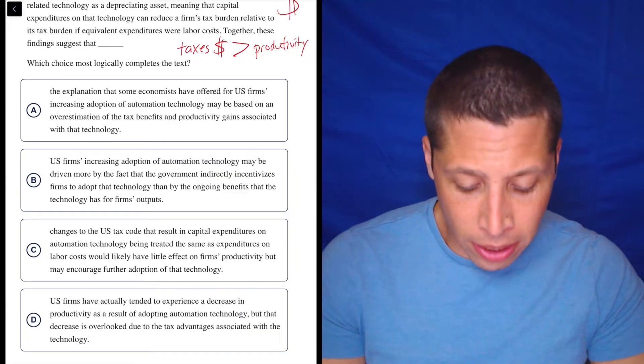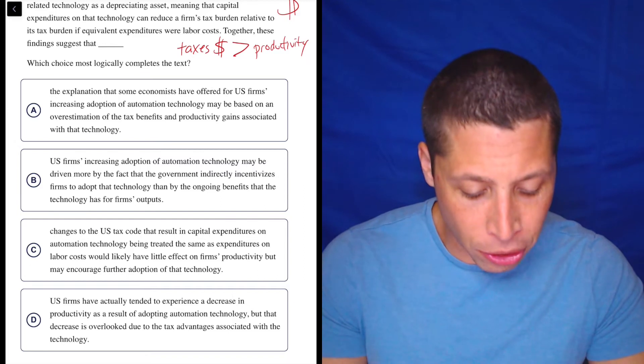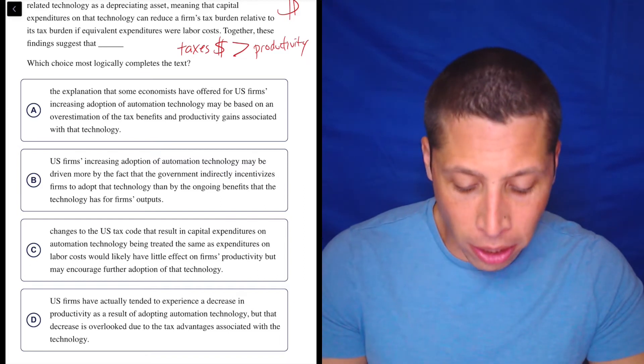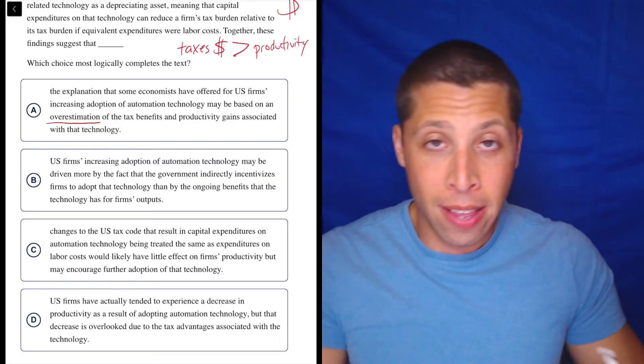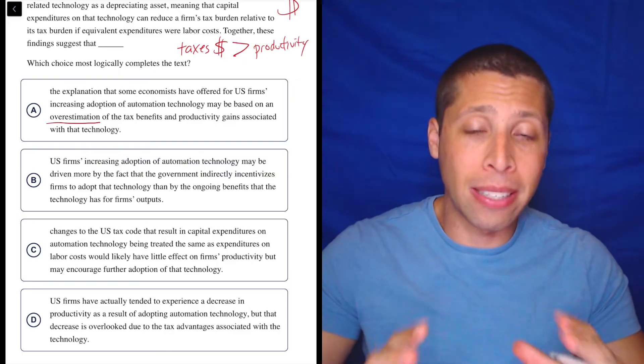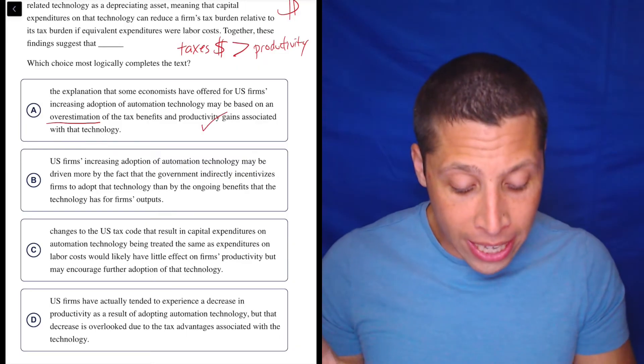A, the explanation that some economists have offered for U.S. firms' increasing adoption of automation technology may be based on an overestimation of the tax benefits and productivity gains associated with that technology. So strong words, overestimation. That basically means that something is wrong.